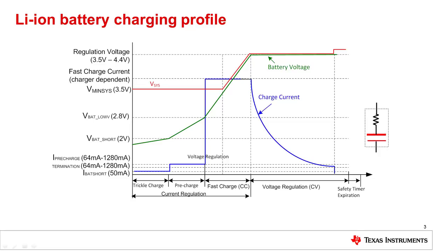Some chargers do provide a system output voltage, and during this time when the battery voltage is low, these chargers will provide a minimum system voltage to ensure that the system the battery is intended to power can start up. Once the battery reaches the regulation voltage — or at least the voltage at the pin of the battery charger has reached the regulation voltage — the charge current begins to taper and the battery charger enters voltage regulation mode. The system voltage typically sits just a few millivolts higher than the battery voltage, and eventually the charge current will taper down to the termination current level and battery charging will stop.